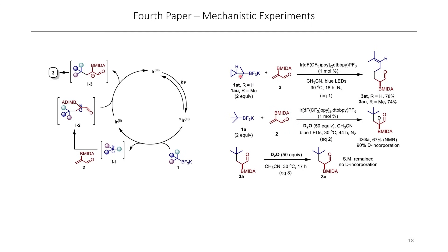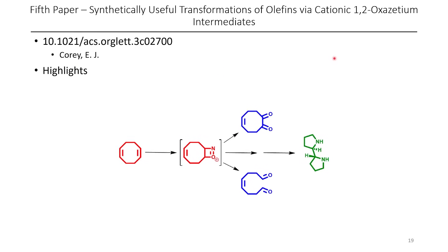This first experiment with the cyclopropane is just a radical trapping experiment — you can see radical ring opening of the cyclopropane, which is why they have an alkene in their product. The fifth and final paper for today comes from E.J. Corey. He's still publishing at 95, and I really like this paper.